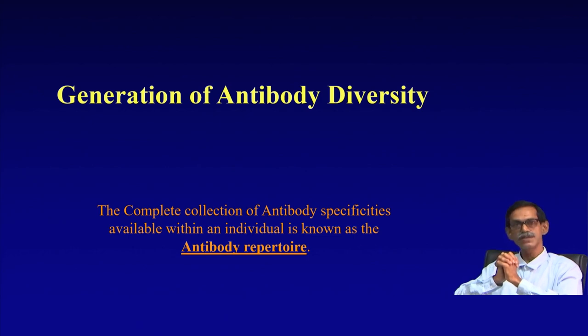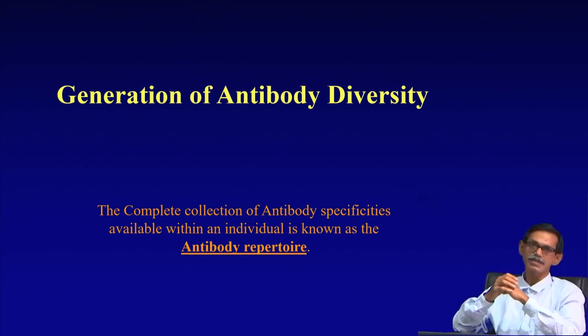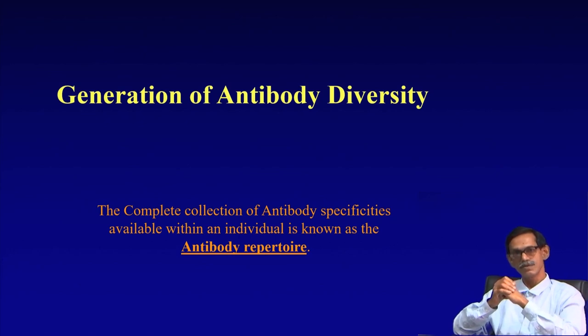In one of my basic concept classes I told you to check what is the meaning of repertoire. The complete collection of antibody specificities available within an individual is known as the antibody repertoire. With time it is changing because B cells continuously develop. Their receptor modification is a continuous process, so the variety of antibodies and their amounts are also changing. That is why the antibody repertoire is not fixed at a particular time.